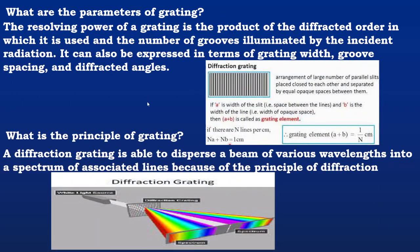What are the parameters of grating? The resolving power of grating is the product of diffracted order in which it is used and the number of grooves illuminated by the incident radiation. It can also be expressed in terms of grating width, groove spacing, and diffracted angles.